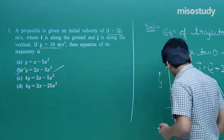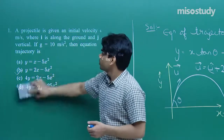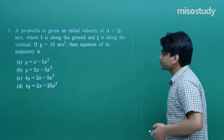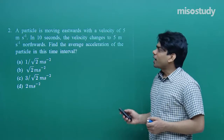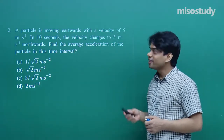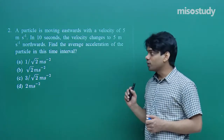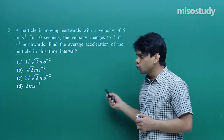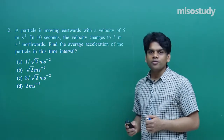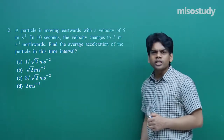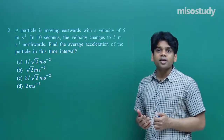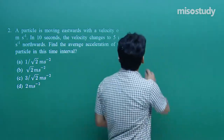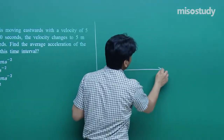Let's go ahead with the next question. Question 2: A particle is moving eastward with a velocity of 5 m/s. In 10 seconds the velocity changes to 5 m/s northward. Find the average acceleration of the particle in this time interval. Options: (a) 1/√2, (b) √2, (c) 3/√2, (d) 2 — with units m/s².